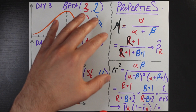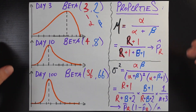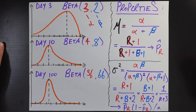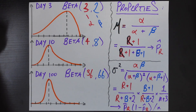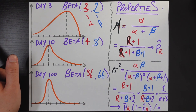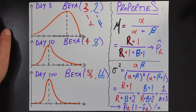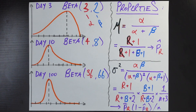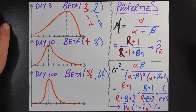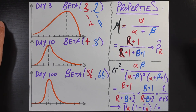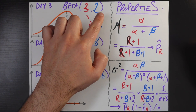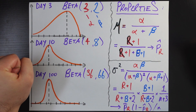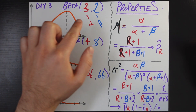We consider every time the professor wears blue shoes as our failures. More specifically, alpha is the number of successes observed so far plus one. So after three days, alpha is equal to 3, because the professor wore red shoes two times and two plus one equals three. Similarly, beta is the number of failures observed so far plus one. After three days, the professor wore blue shoes one time, and one plus one equals two. So we model this as a Beta(3, 2) distribution.